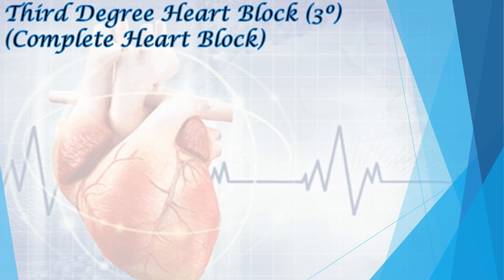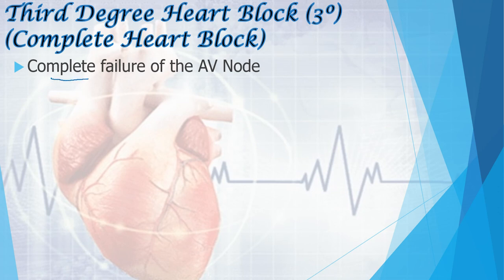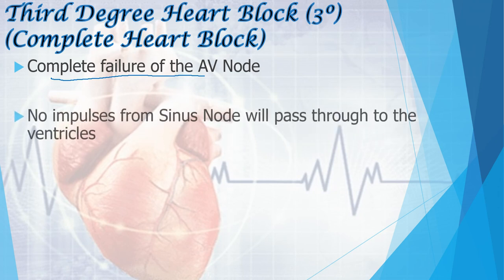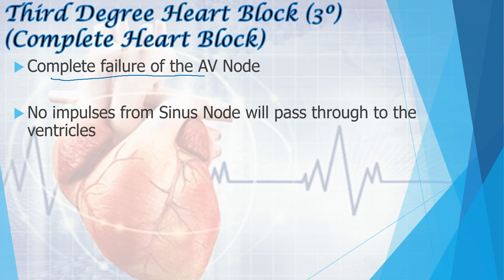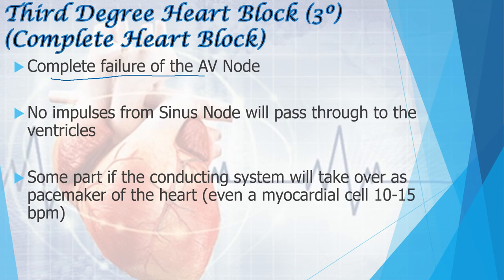The third degree heart block, also called complete heart block, involves complete failure of the AV node — no impulses from the SA node pass through to the ventricles. Some part of the conducting system takes over as the pacemaker of the heart. Even myocardial cells or Purkinje fibers can generate 10 to 15 beats per minute, but that is not sufficient to meet the metabolic demands of the body. The atrial pacemaker site remains the SA node at 60 to 100 bpm, while the ventricular escape rhythm from the AV junction is 40 to 60 bpm, or from the ventricles, 20 to 40 bpm.